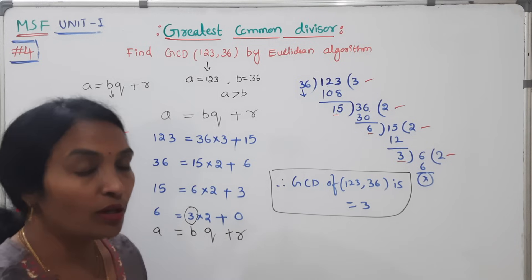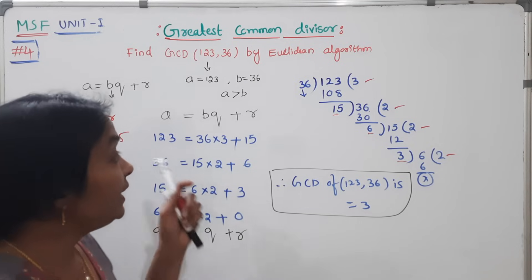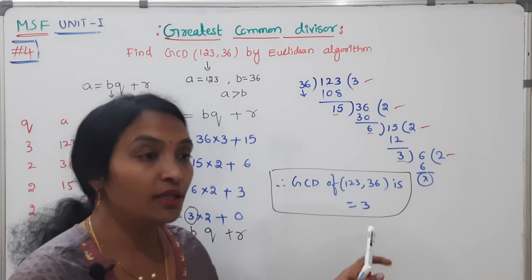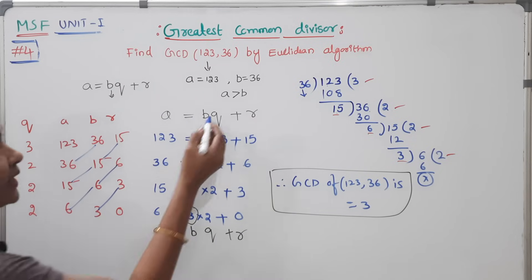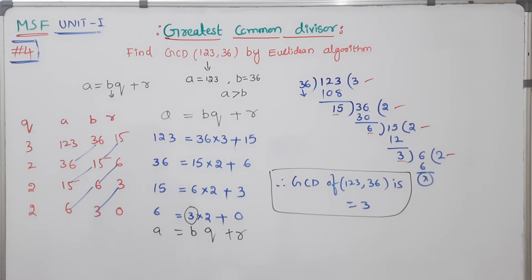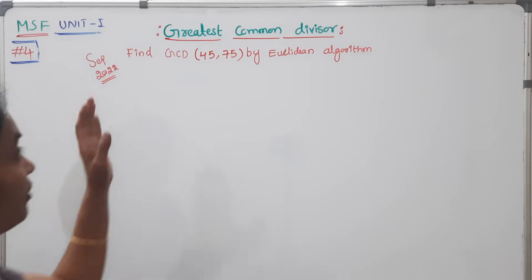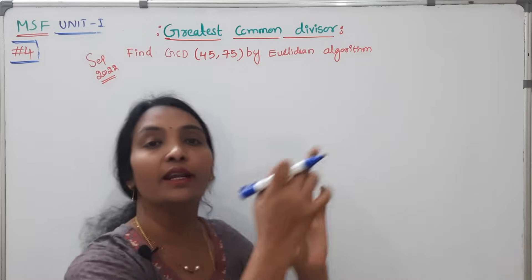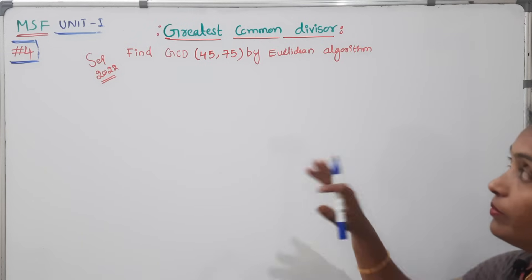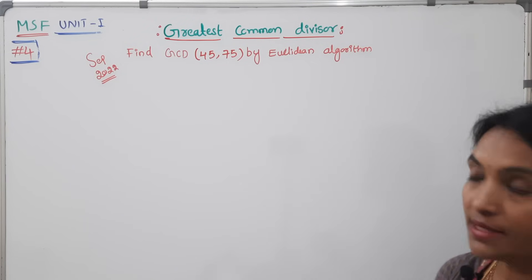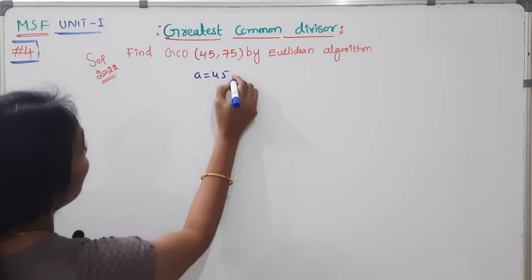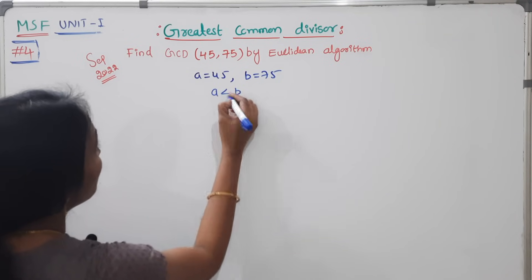Once again, this is for A greater than B. What do we do when A is less than B? This is from a previous exam — September 2022. Next problem: find GCD of 45 and 75 by Euclidean algorithm. This is a September 2022 supplementary MSF exam question worth 3 to 4 marks. Here A is 45 and B is 75, so A is less than B. You don't have any tension — it's simple.